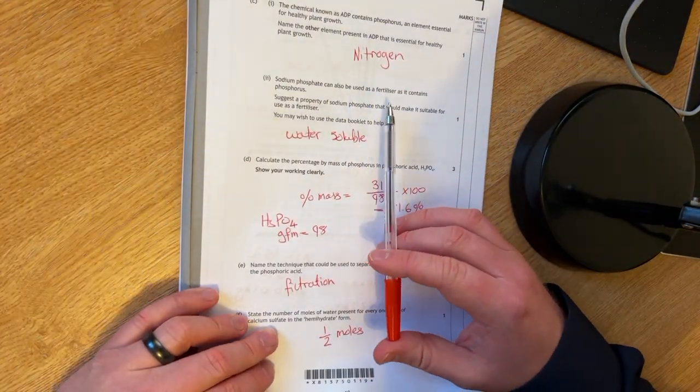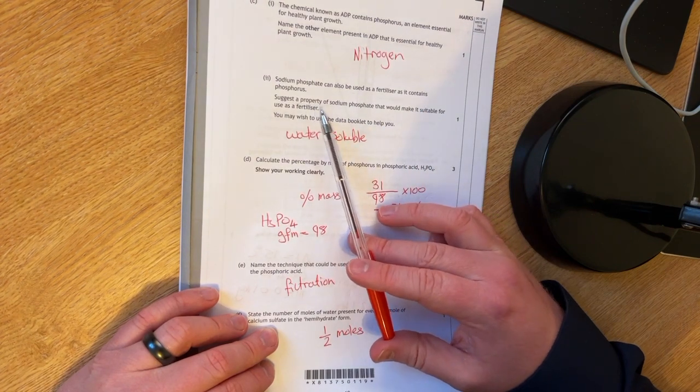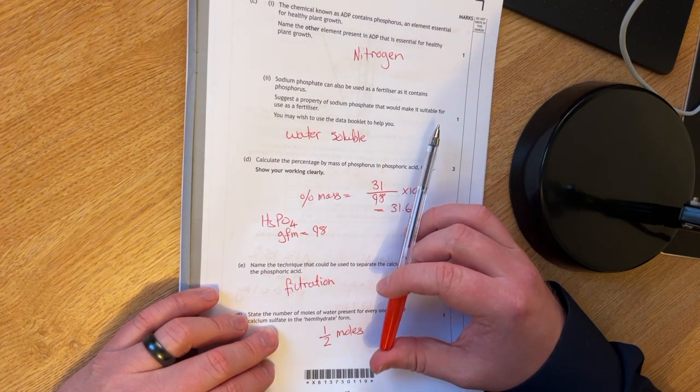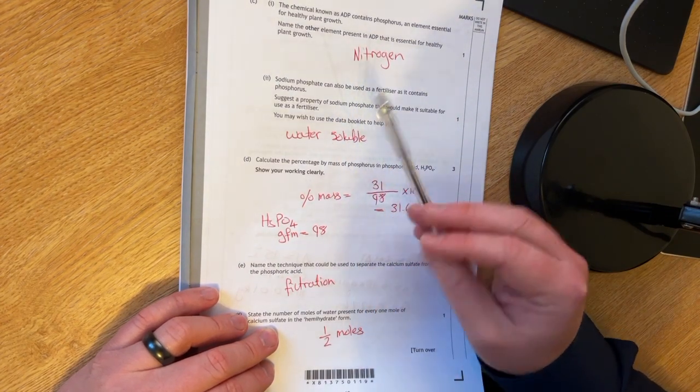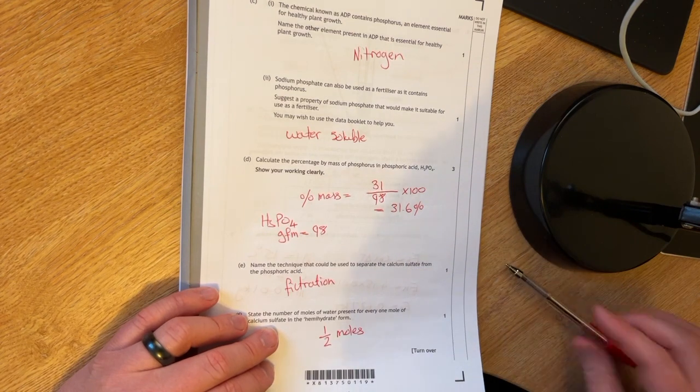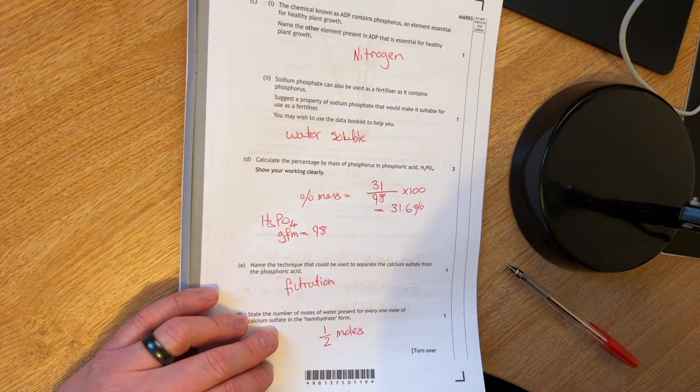Sodium phosphate can also be used as a fertilizer as it contains phosphorus. State a property of sodium phosphate that would make it suitable for use as a fertilizer. It's water soluble, I think. And that's all we're looking for there.